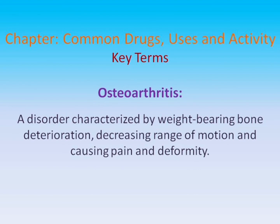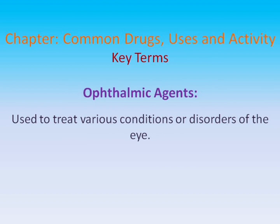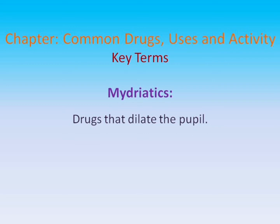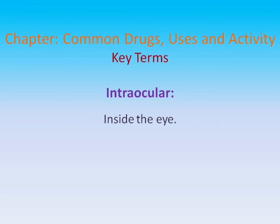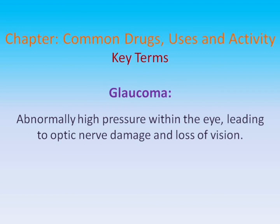Osteoarthritis: A disorder characterized by weight-bearing bone deterioration, decreasing range of motion, and causing pain and deformity. Rheumatoid arthritis: A disease in which the body's immune system attacks joint tissue. Ophthalmic agents: Used to treat various conditions or disorders of the eye. Mydriatics: Drugs that dilate the pupil. Intraocular: Inside the eye. Conjunctivitis: Inflammation of the eyelid lining. Glaucoma: Abnormally high pressure within the eye, leading to optic nerve damage and loss of vision.